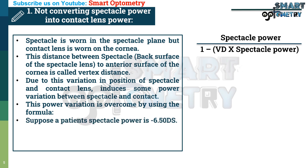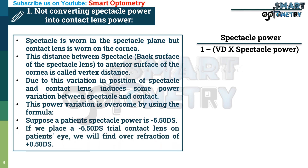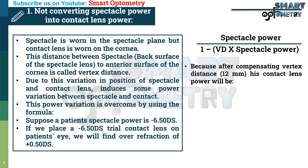For example, suppose a patient's spectacle power is -6.5 diopter spherical. If we place a -6.5 diopter spherical trial contact lens on the patient's eye, we will find an over-refraction of +0.5 diopter spherical. Because after compensating vertex distance of 12 mm, the contact lens power should be -6.0 diopter spherical.